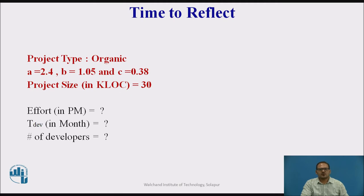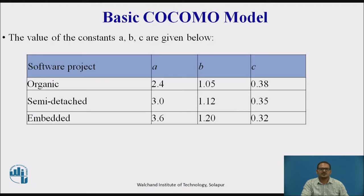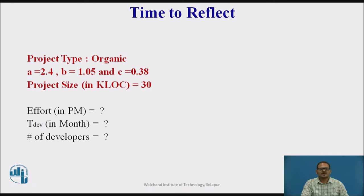Let us try to solve a practice question. For an organic type project, the constants are a = 2.4, b = 1.05, and c = 0.38 — taken from the organic type values. Find the effort, development time, and number of developers for a project size of 30 KDSI (30,000 lines of code).